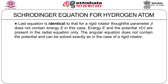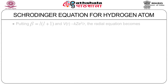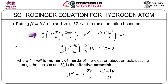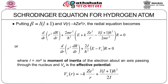The angular equation does not contain the potential and can be solved exactly as in the case of a rigid rotator. For an electron inside the atom, the angular momentum quantum number is denoted by L instead of J. The quantum number J is reserved for the total angular momentum of the electron including spin. The solution of the angular part restricts the value of β to L(L+1), as in the case of a rigid rotator. Putting β = L(L+1) and V(r) = −kze²/r, the radial equation takes a specific form.